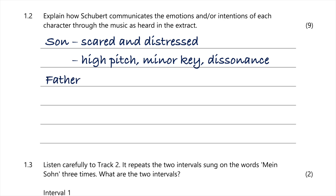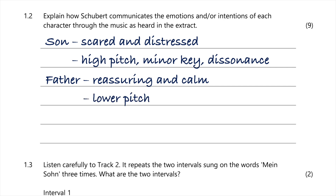Looking at the father in this extract, he's trying to reassure his son and calm him down. To convey that, the music is at a lower pitch with a more conjunct melody. This links to opera — a conjunct melody without big jumps between notes shows more control and calm. The tonality here also comes into play.